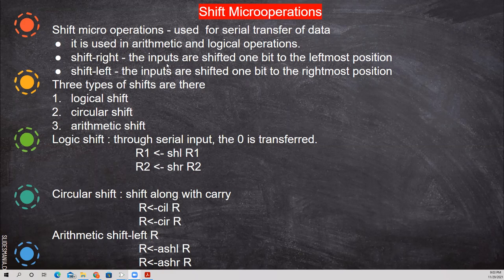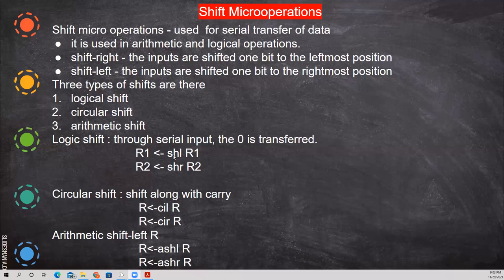For shift right, the inputs are shifted one bit to the leftmost position. For shift left, the inputs are shifted one bit to the rightmost position. In micro operation notation: R1 shift serial left (SHL) means shift left; R1 shift right R2 for shift right. CIL is circular shift left, CIR is circular shift right. For arithmetic shift: ASHL is arithmetic shift left, ASHR is arithmetic shift right.